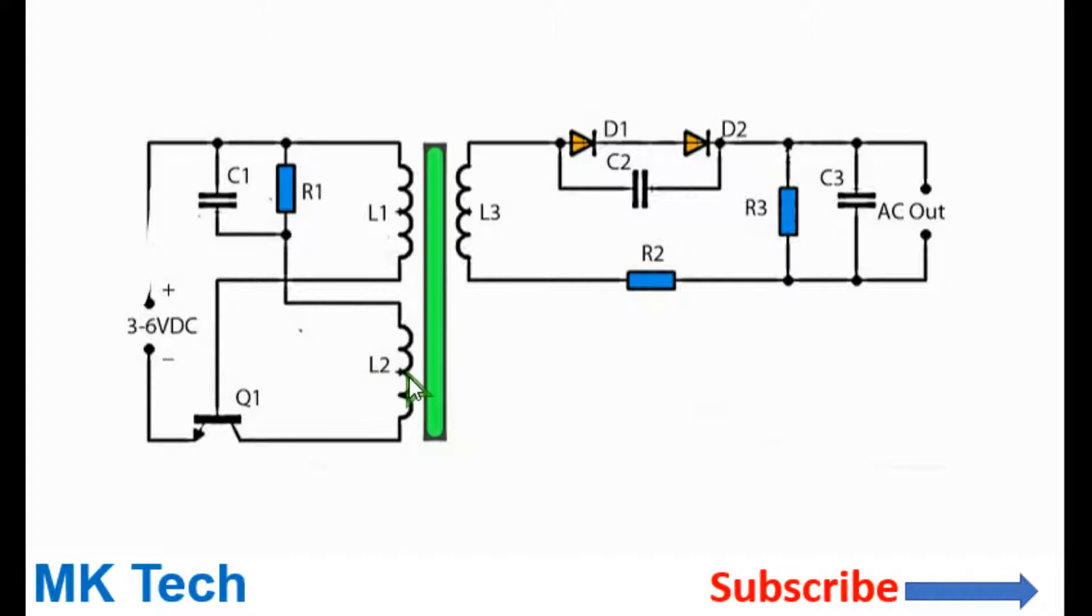Once the current starts collapsing, all the energy stored in the core will be transferred to the secondary side where it is rectified by these two diodes and filtered by the capacitor. This capacitor removes any voltage spikes on the secondary side.